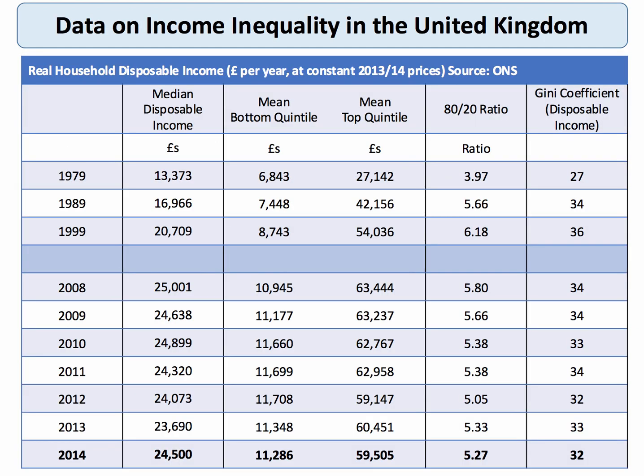Another big supply-side issue is inequality. In 2014, median disposable income was £24,500. People in the bottom 20% had a median income of just over £11,000, while those in the top 20% had a median income of nearly £60,000 — over five times the difference. Although the Gini coefficient has come down a little in recent years, there's still a very high level of inequality. For some economists, this is a big supply-side problem that needs to be addressed.